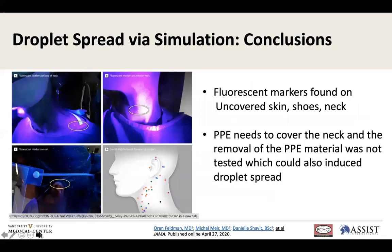The photographs showed a significant number of droplets on the neck and areas where the PPEs did not cover — around the ears and neck specifically. Droplets also landed on the shoes. The suggestion is that when you remove PPE, more droplets fall on different parts of your body. The message is that PPE needs to cover areas like the back of the neck that are normally not covered in standard diagrams.